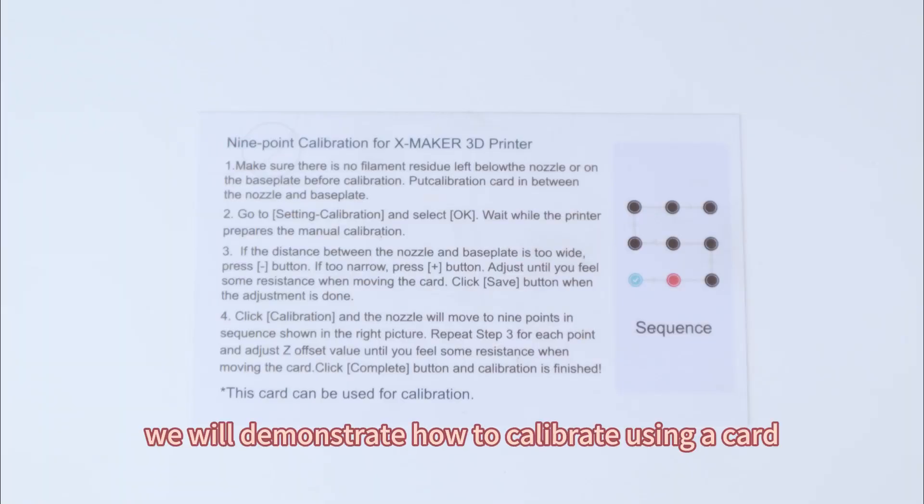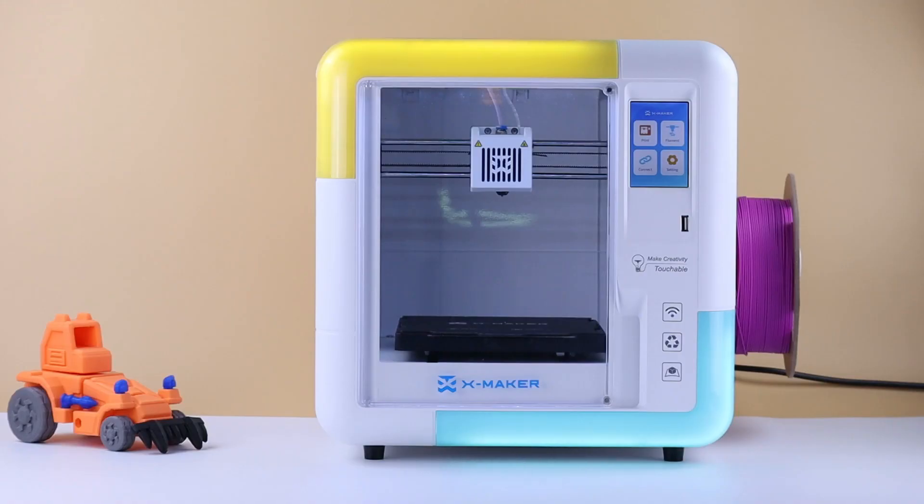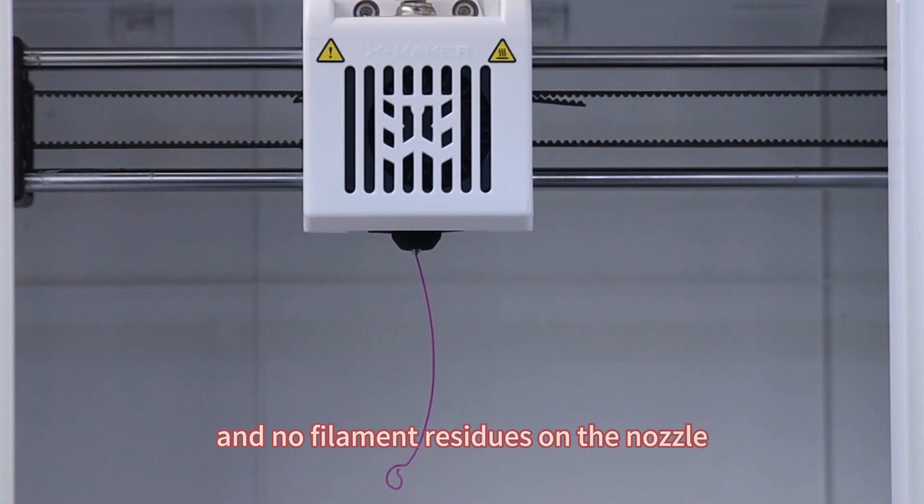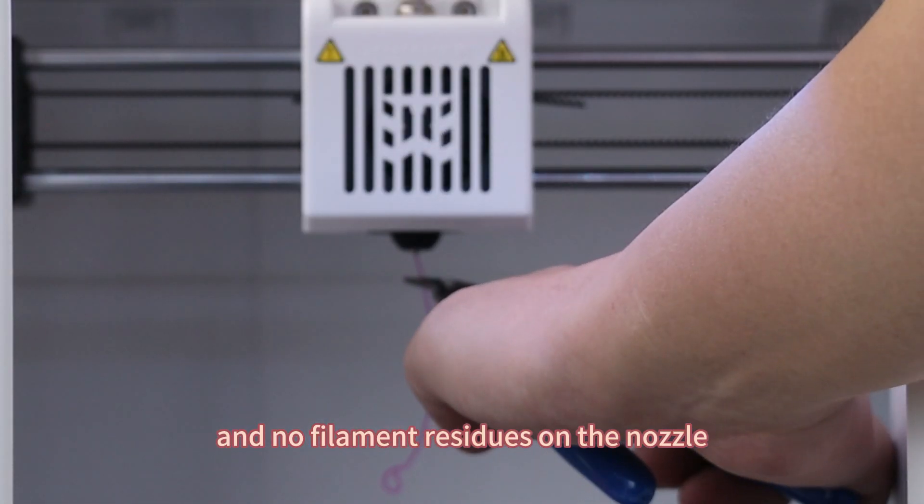In this video, we'll demonstrate how to calibrate using a card. Before calibration, make sure there are no models on the base plate and no filament residues on the nozzle.